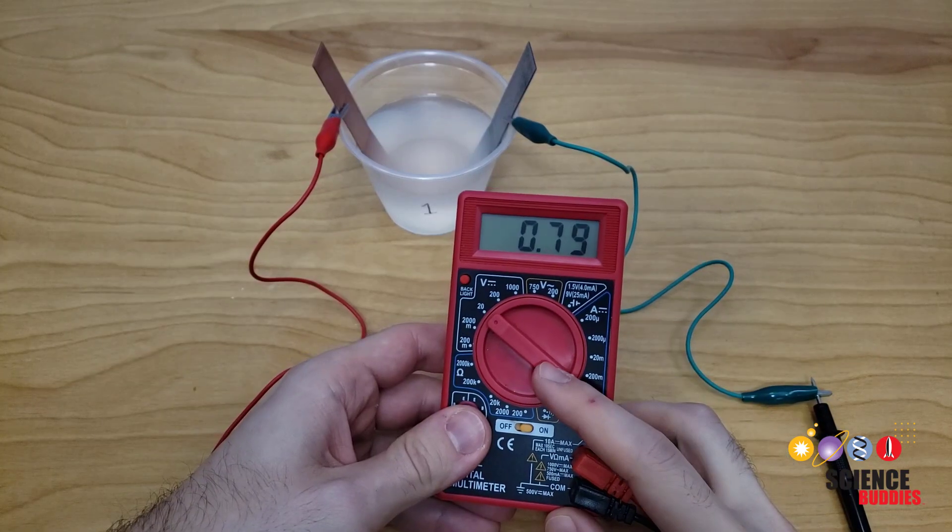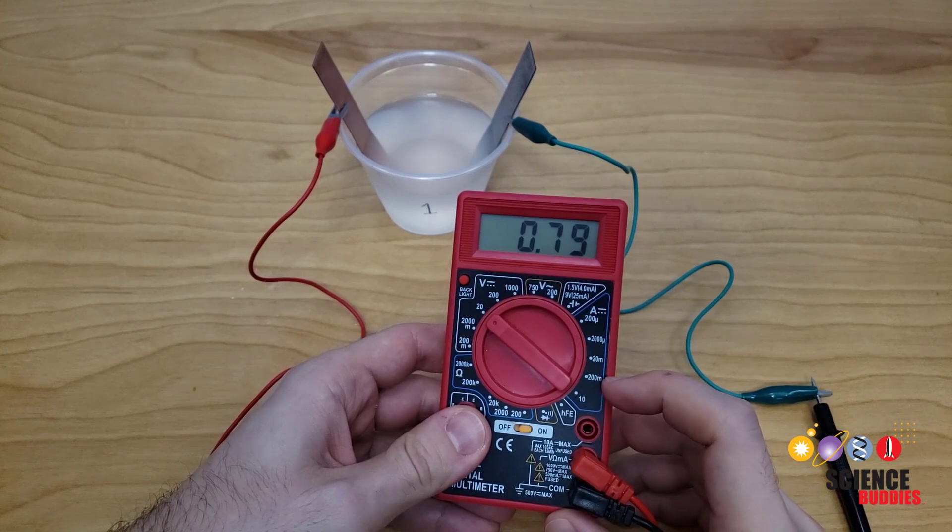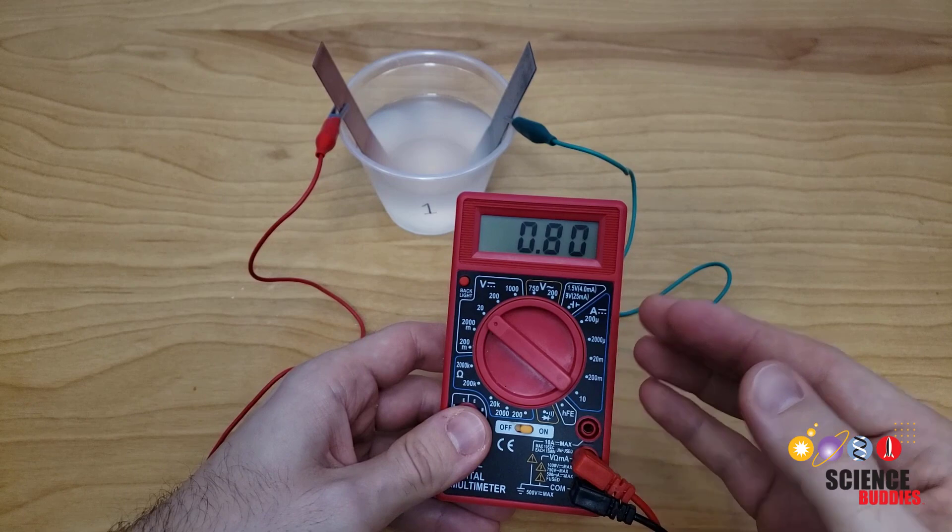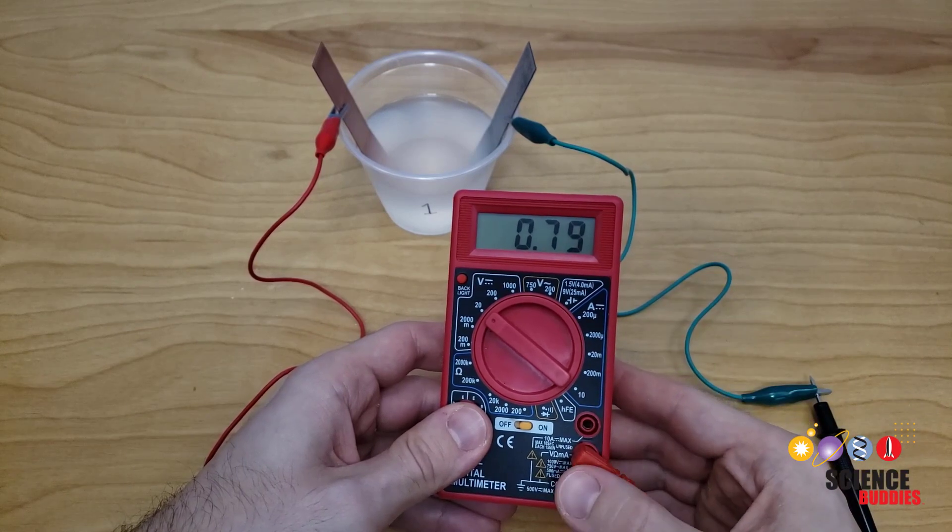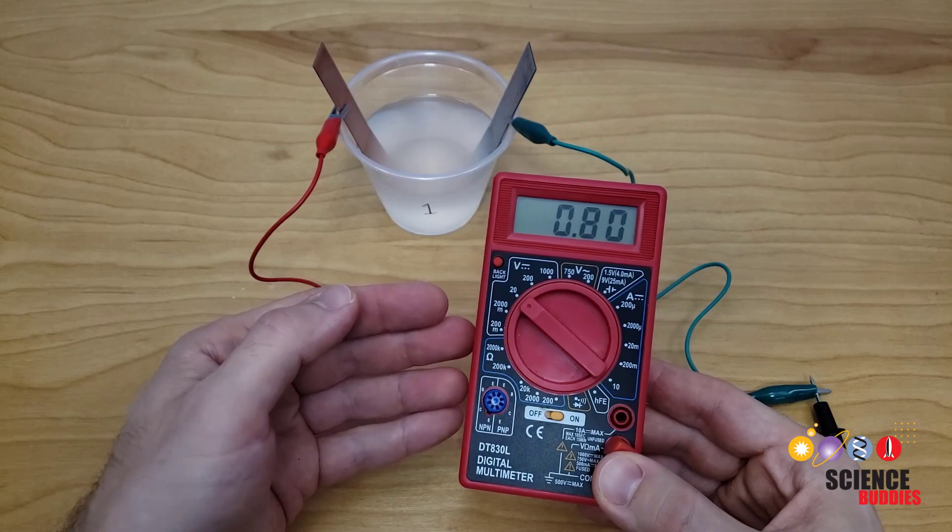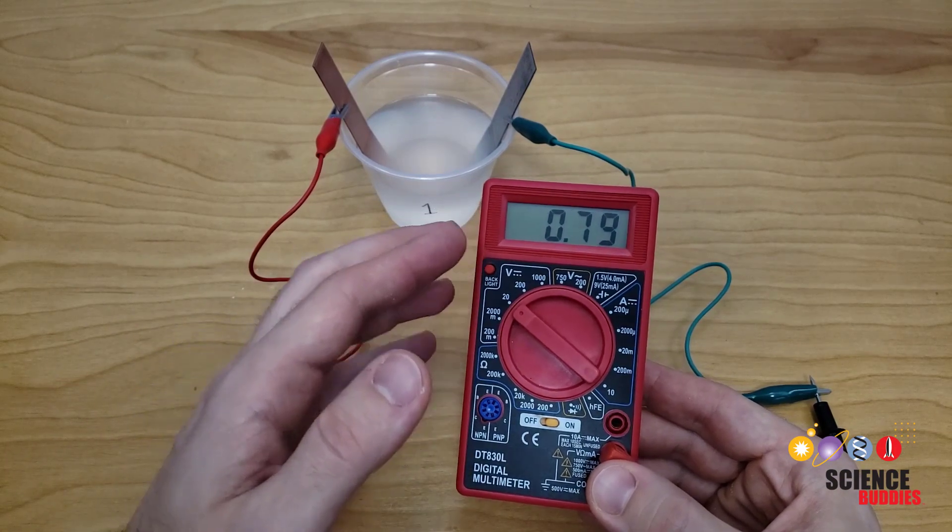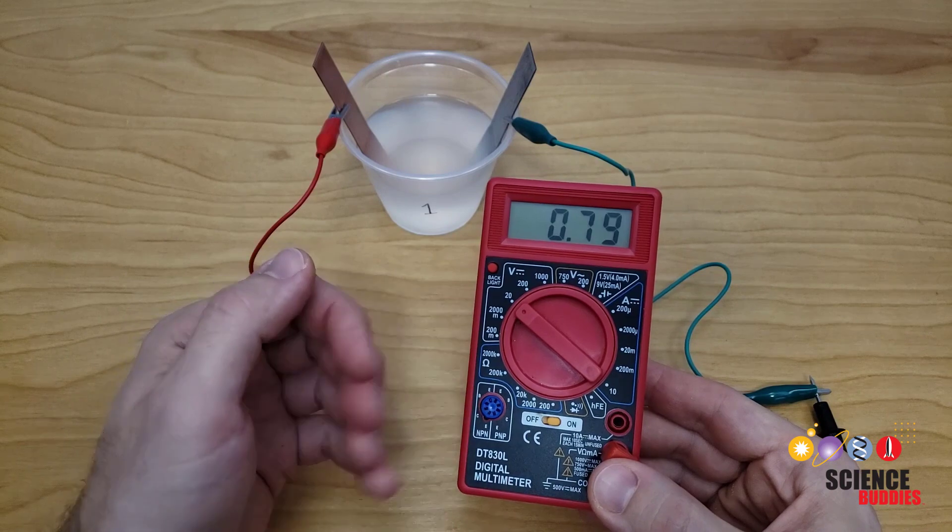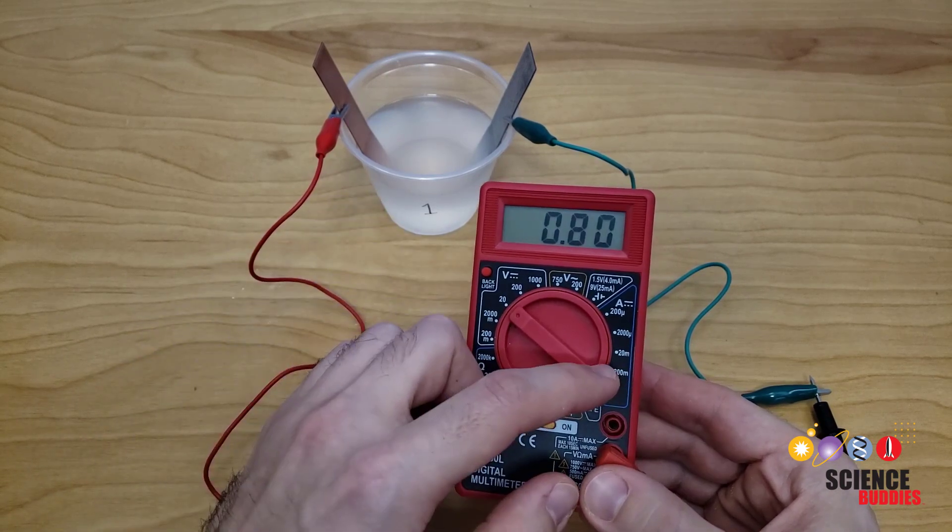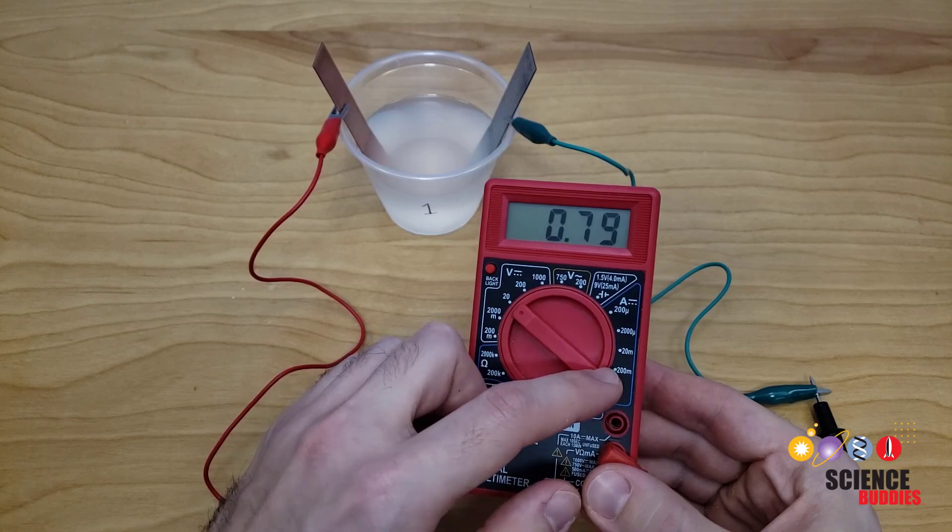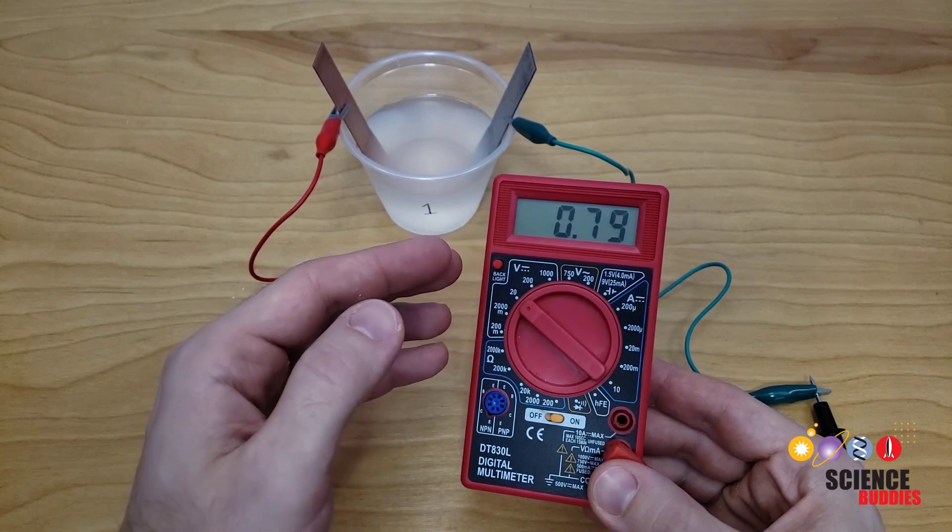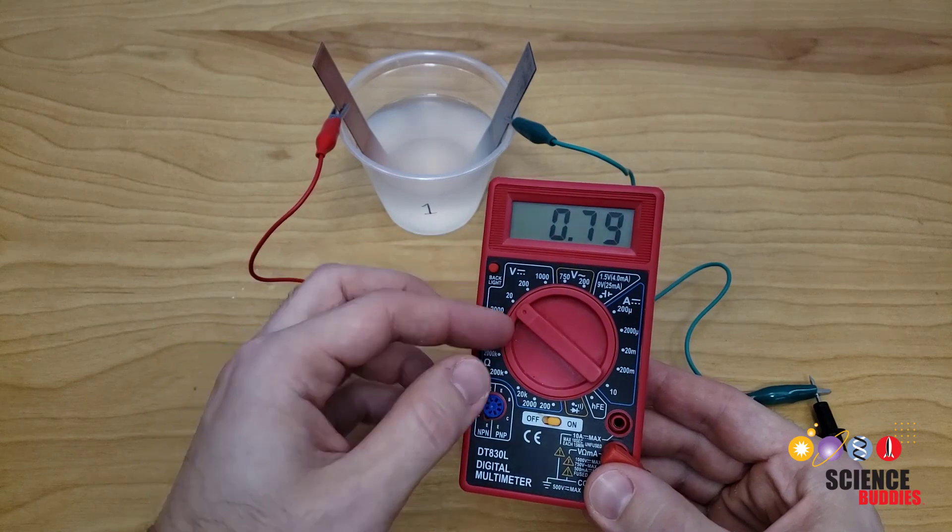Next, we're going to switch the dial over to measure the 200 milliamps direct current range. This effectively short-circuits the battery and allows a very large amount of current to flow, so it measures the maximum amount of current the battery can supply. But unlike the voltage, the current reading will not stay steady. It will start to drop rapidly as the battery begins to drain. So you can record the initial reading as quickly as possible when you move to that dial setting, and then wait three minutes and record the more stable reading.